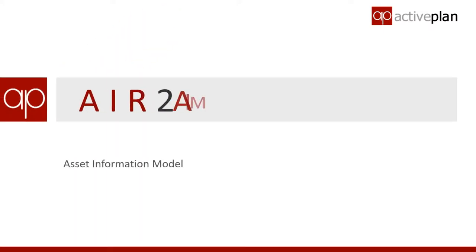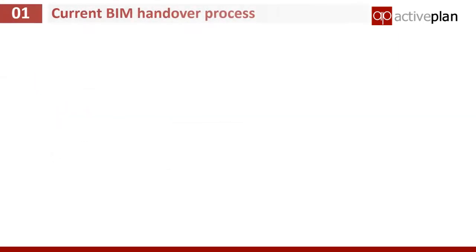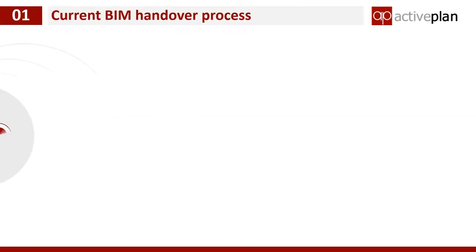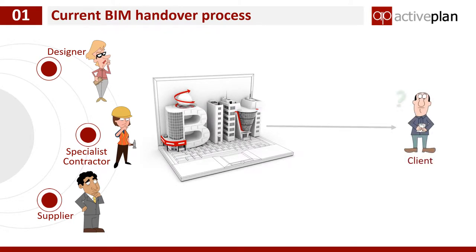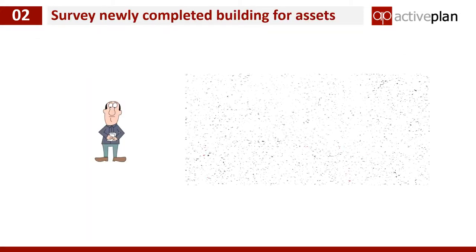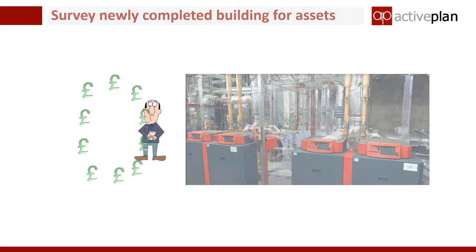At ActivePlan we work with clients who need better data to run their facilities and they're investing in BIM because they expect it to deliver what they need. But most of them struggle to specify what they do need, so they tend to ask for everything that was put in the BIM model — but then after wading through it all they find it doesn't contain what they expected. So you get into the situation where many end up commissioning an asset survey of a brand new building to find out what was actually installed. How mad is that?